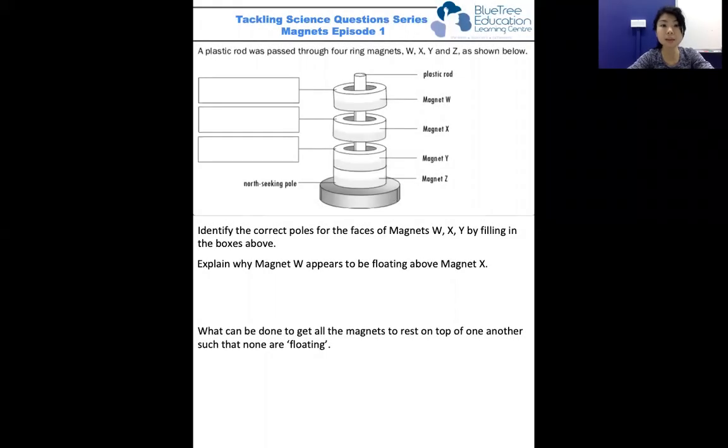Let's look at the first question on magnets. We have a plastic rod and four ring magnets, as you can see below. The question asks us to identify the poles of the faces of W, X, and Y by filling in the boxes above.